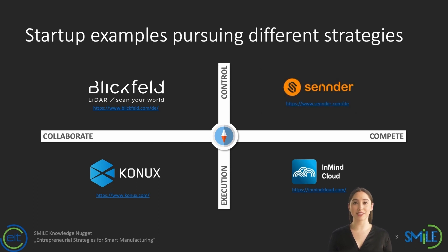The startup Sennder is a good example of pursuing an architectural strategy. Sennder is a digital road freight forwarder connecting large commercial shippers with small freight carriers on its two-sided market platform. Sennder provides digitization, automation, transparency, and efficiency to the European road freight market, which had been dependent on paper, phone, and fax, and characterized by multi-layer subcontracting.